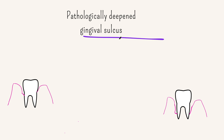The gingival sulcus ideally should have zero mm probing depth, but this is impossible to achieve clinically as the gingiva is in a constant state of inflammation. You almost get one to two mm when you probe a healthy gingiva, but two to three mm is permissible. When the probing depth is greater than four mm, we call it a pocket.